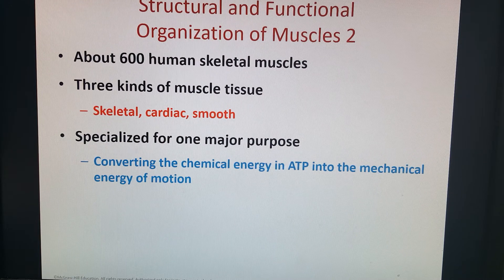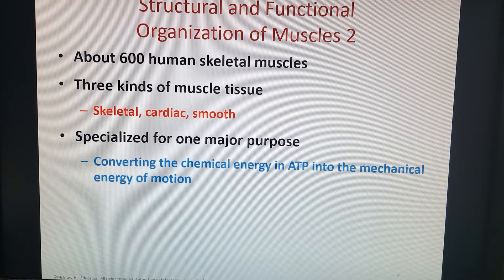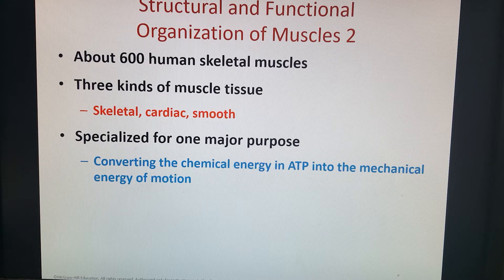Those three types of muscle tissue, going back to our tissues chapter — chapter five. We have skeletal, cardiac, and smooth. Skeletal is the only one that can be consciously controlled by your brain — the only type you can tell to move. The specialized purpose of muscle is to convert the chemical energy in ATP into the mechanical energy of motion. In order to power the actual muscle contraction, you need ATP.